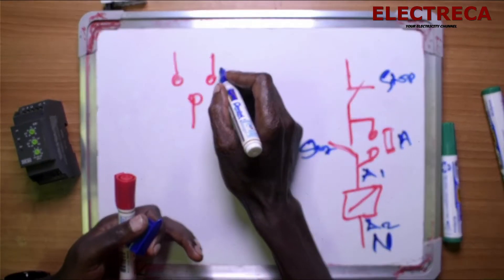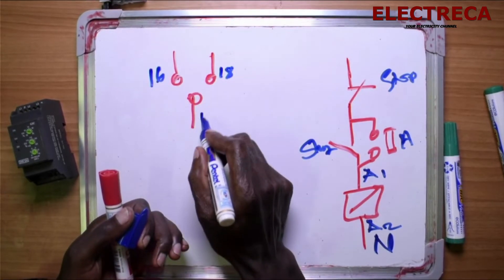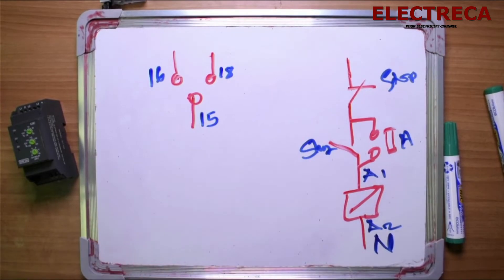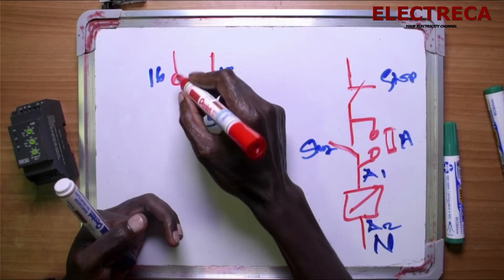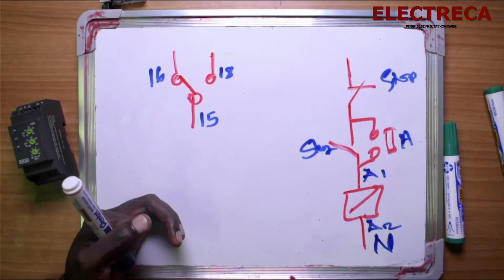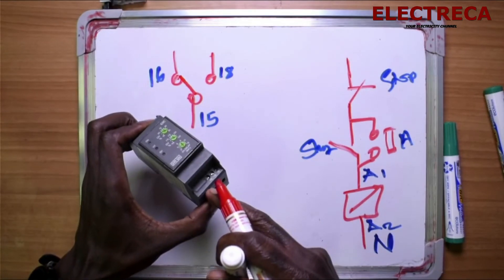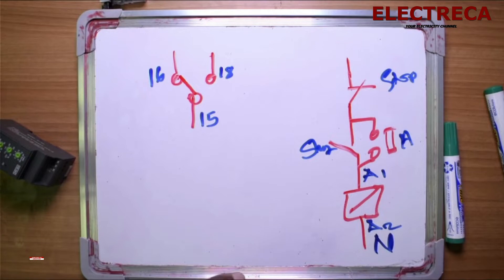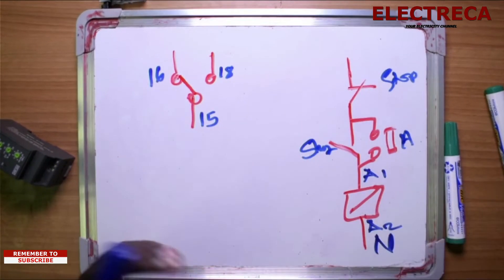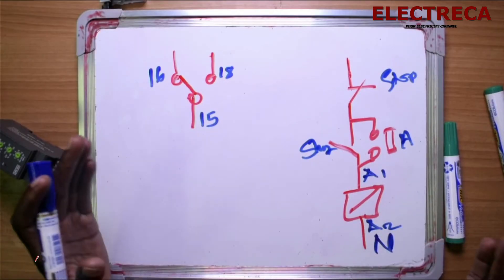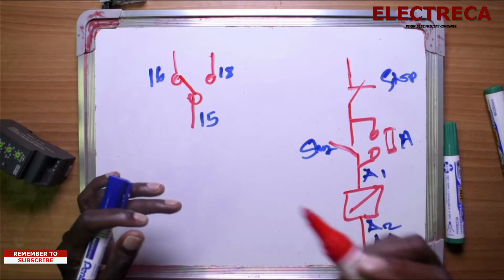This is 18, this is 16, this is 15. And we know that 15-16 is normally closed, 15-18 is normally open. This is what you're seeing here. Now you can connect it before or after the overload, it doesn't matter anyway, it can drop the circuit in case it has to.